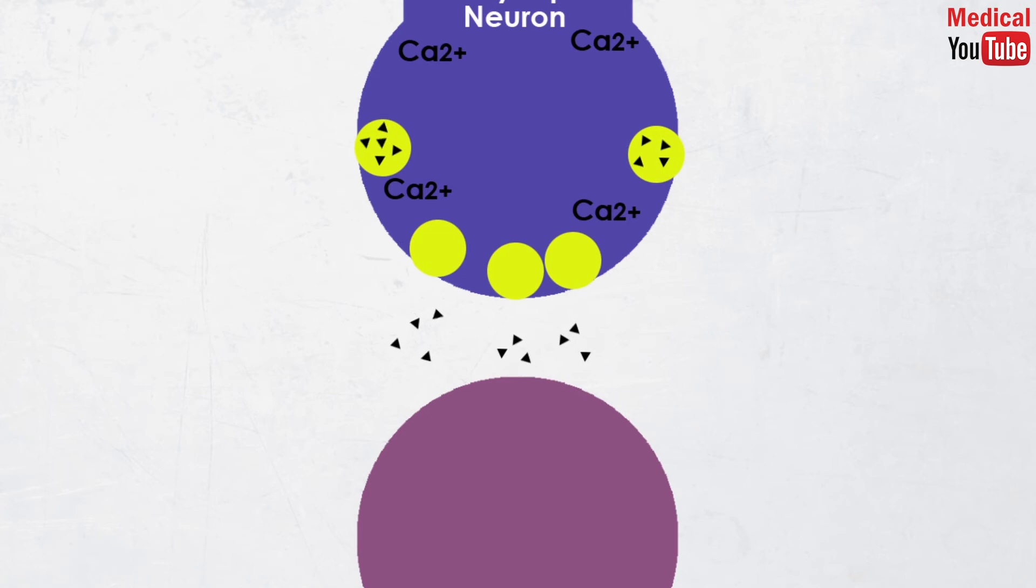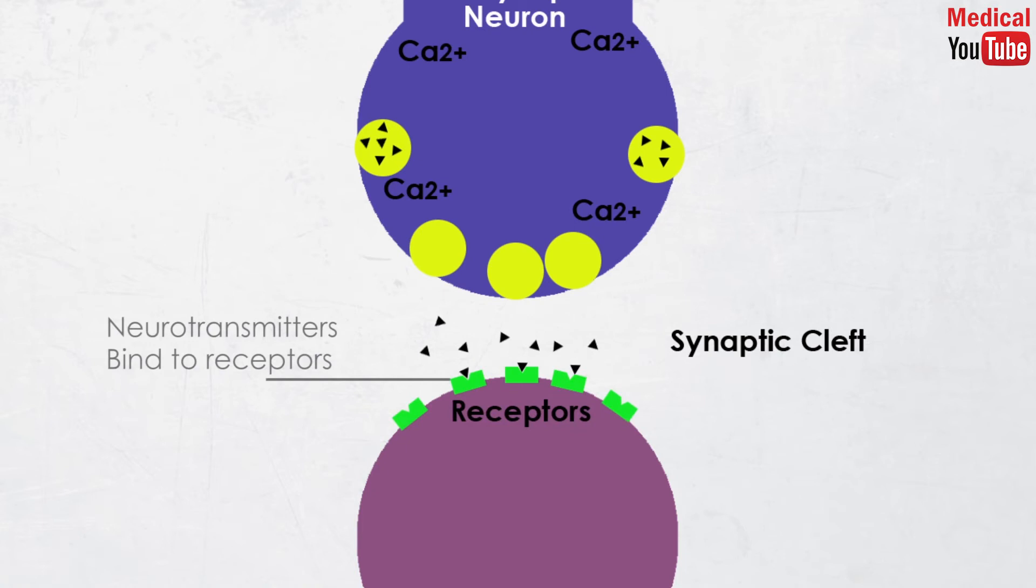We should notice that there is no direct contact between the nerve terminal and the effector organ, so connection between them is done by chemical neurotransmitters. The neurotransmitter binds to its specific receptor on the effector organ.